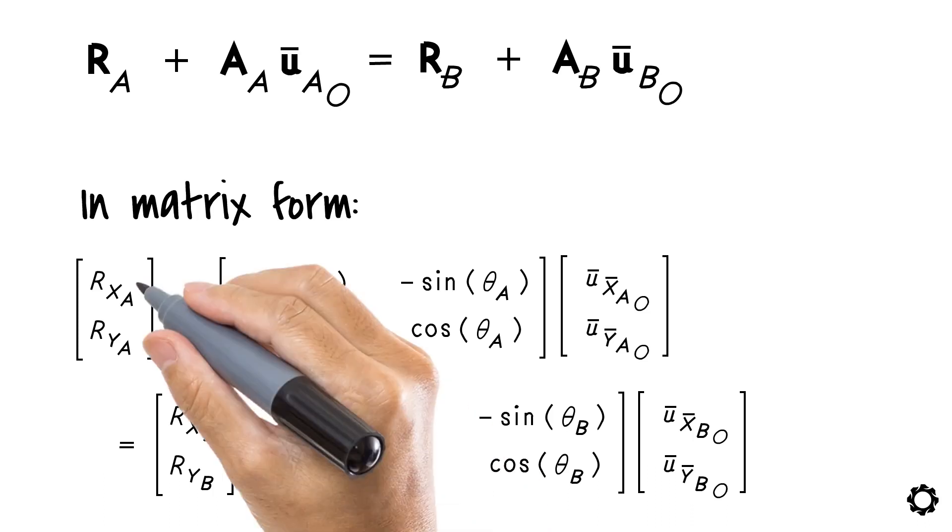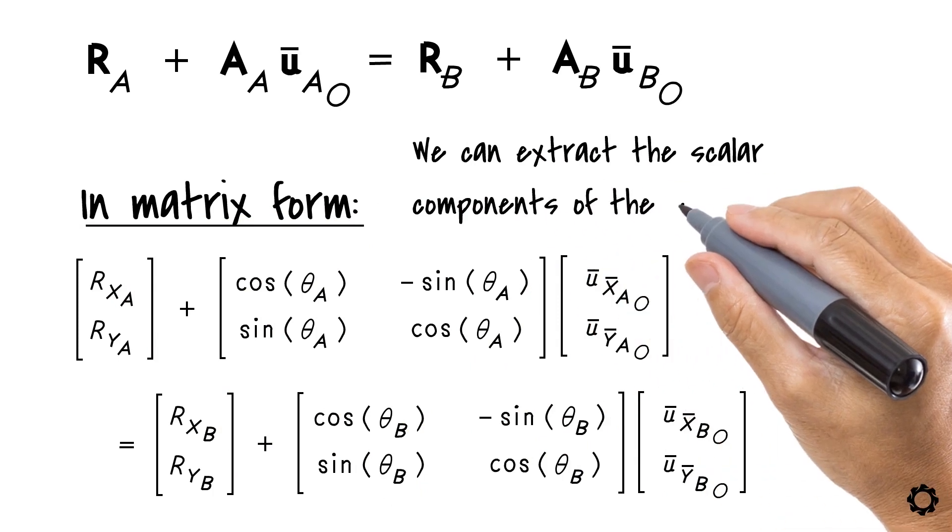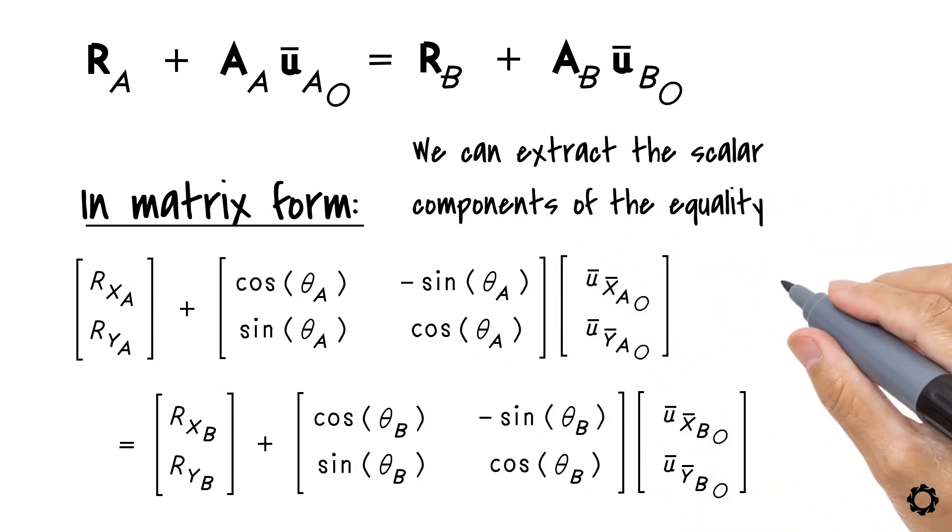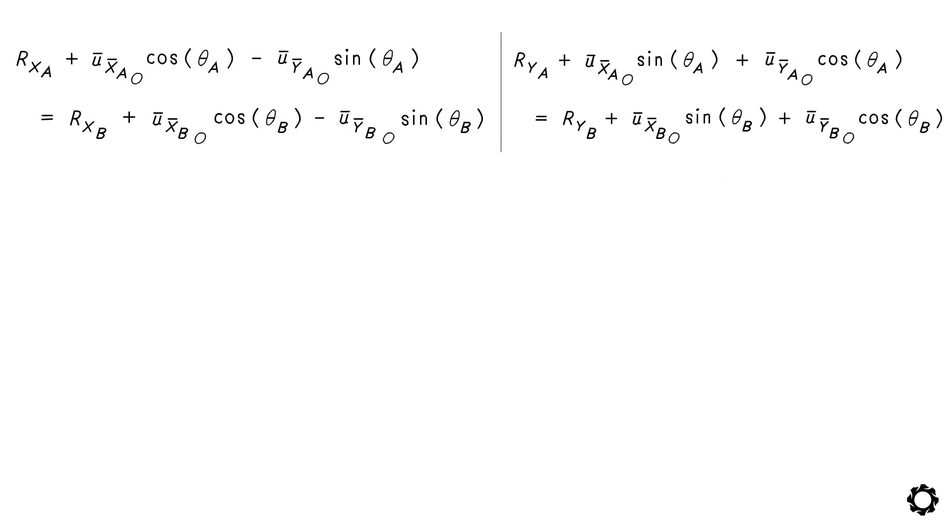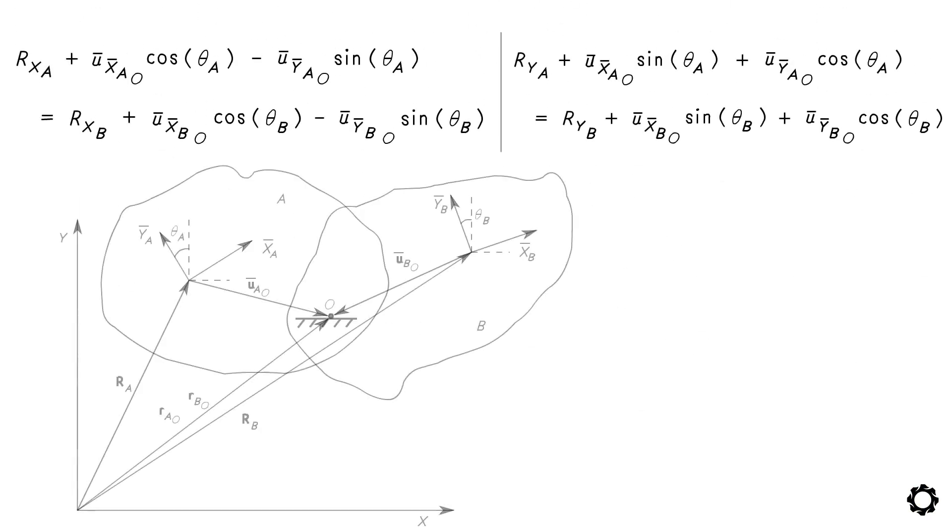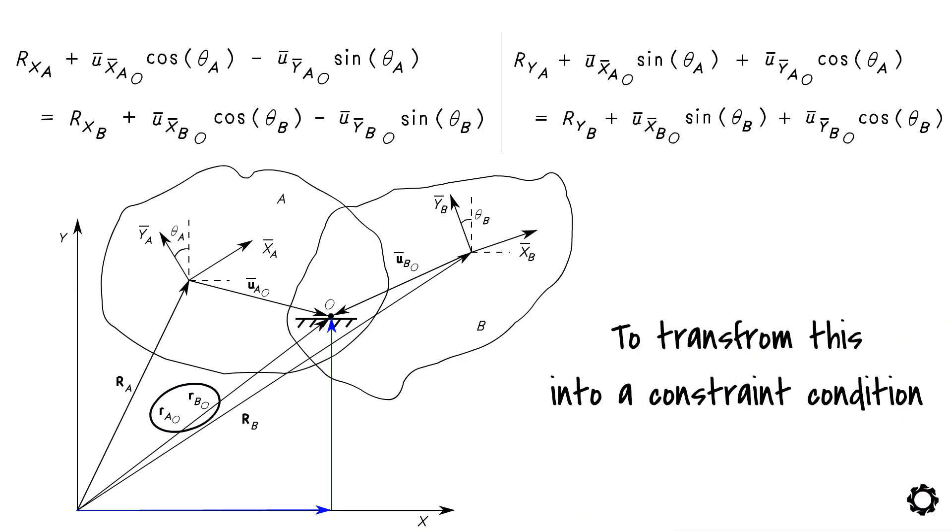One of the benefits of having it in matrix form is that we can extract the scalar components of the equality which are two: the upper and lower row of the matrix representation. Take a look now. These two scalar equations are the components of the vector on the X and Y axis respectively. To transform this into a constraint condition, we have to do a little rearranging.